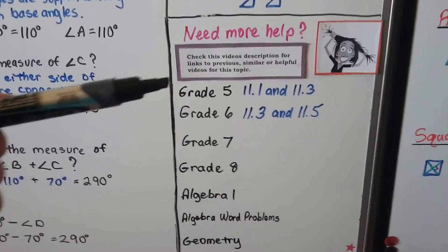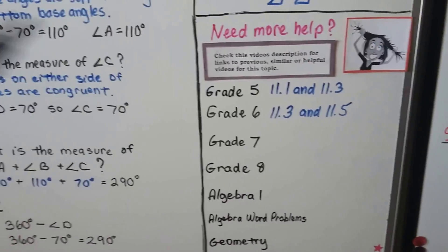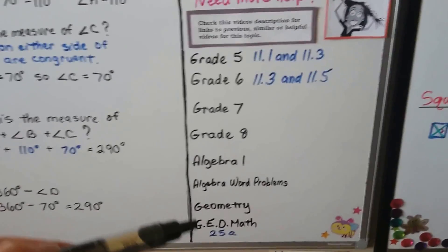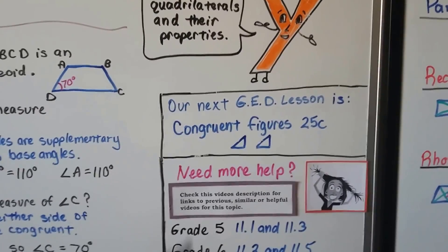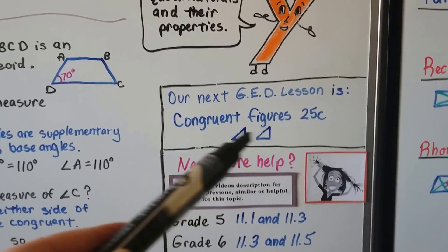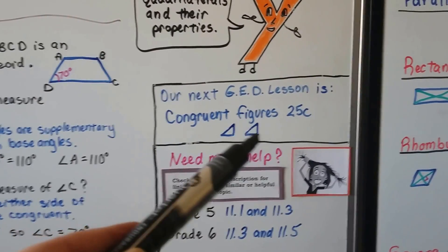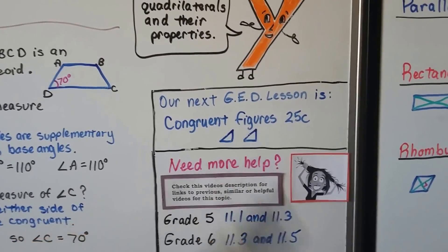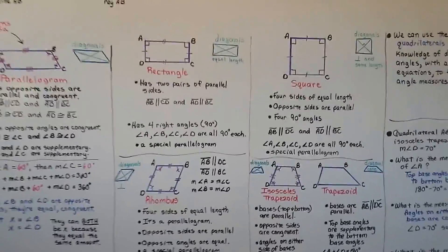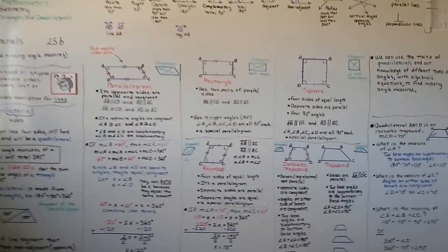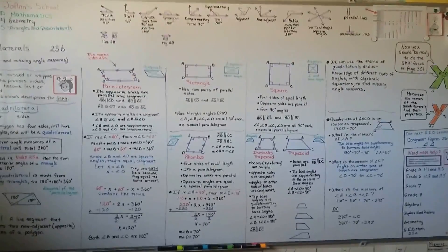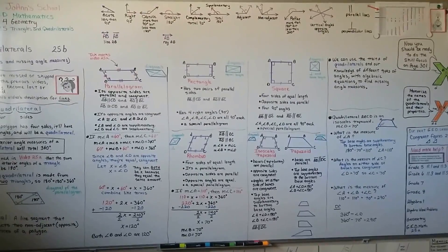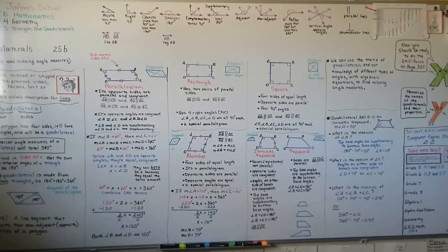I'm going to have links to some grade 5 and grade 6 math videos that talk about all of this. There's also going to be a link to the triangle video, 25A. We're going to talk about congruent figures next in 25C — that's two polygons that might have the same side lengths or the same angle measures to see if they're congruent to each other. If you have to watch this video a second time, no big deal — do it. If that's going to help you pass the test, why not help yourself? Keep trying and I know you're going to do great. Just don't quit.